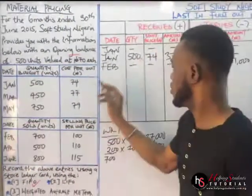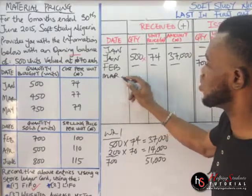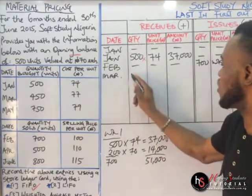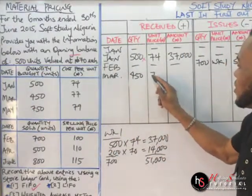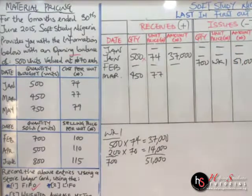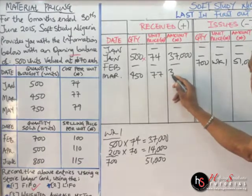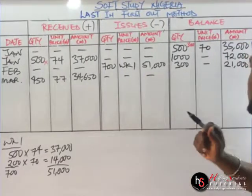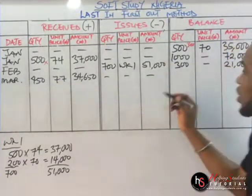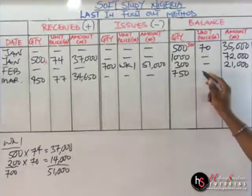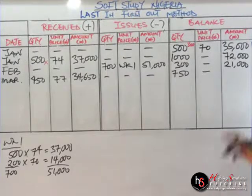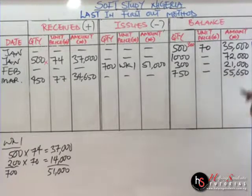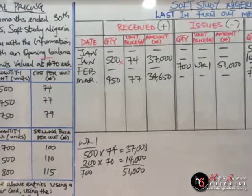We are done with February; we'll come to March. March is a received transaction — no issues here. For March, we have 450 units at 77 Naira. We multiply these two values and it gives us 34,650. So the balance becomes: 300 plus 450 = 750 units, and 34,650 plus 21,000 = 55,650 Naira. That is it for March.